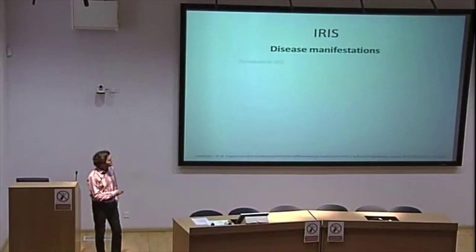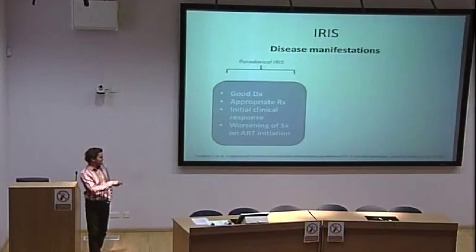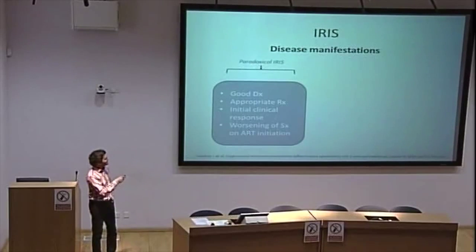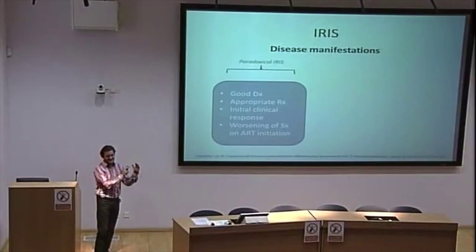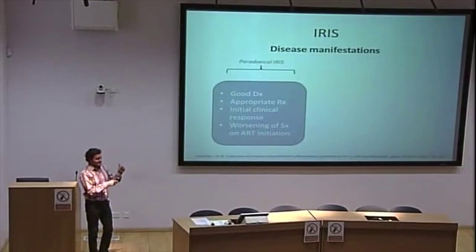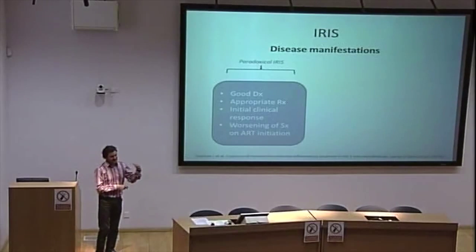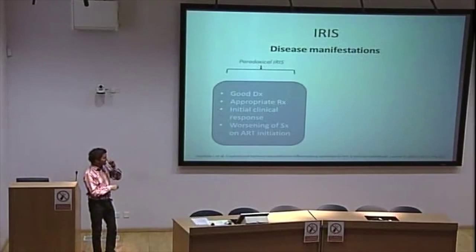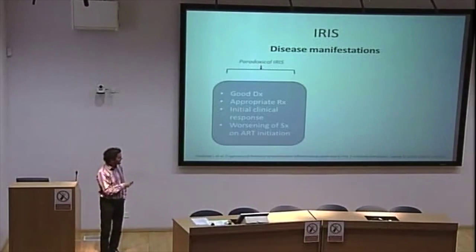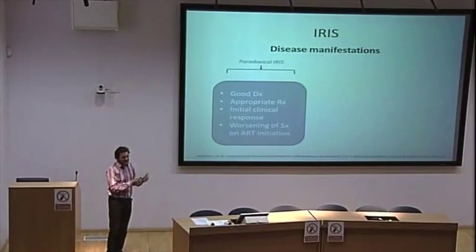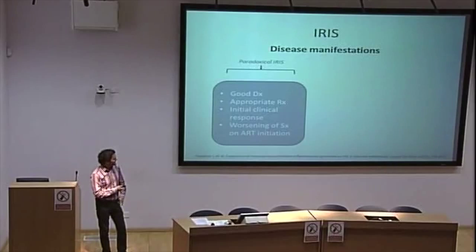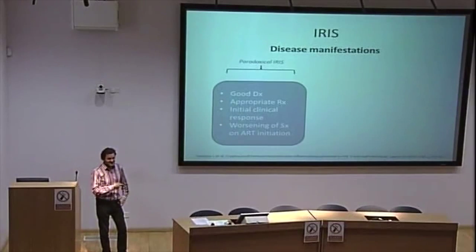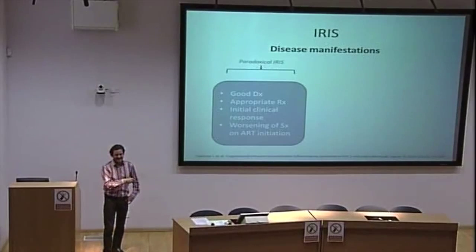There are two forms of IRIS. Paradoxical IRIS is where you have a definitive diagnosis of TB before starting ART, patients are on appropriate standard quadruple therapy and had a good initial clinical response, and then when you start ART, there's a worsening of symptoms. We don't really know why — maybe it's a CD4-driven response, maybe they produce more interferon as their immune system awakens, producing more of a response to unrecognized antigen, or maybe it's a cytokine/chemokine response we haven't yet quantified. This is very much what we also see as paradoxical reactions in the non-HIV population within the first six to eight weeks of starting TB treatment.